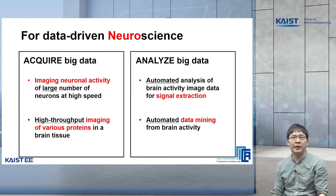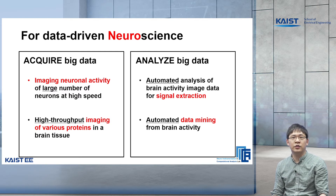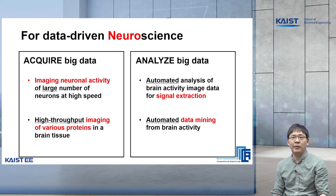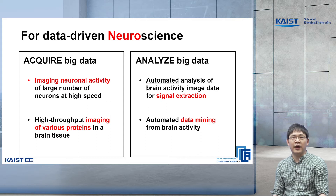On the acquiring the big data side, we are developing technologies to image brain activity of a large number of neurons. We are also working on technologies to simultaneously image various proteins in a brain tissue. On the analyzing side, we develop algorithms to automatically process the brain activity image data to extract the signal from each neuron. And then we apply data mining to find the underlying patterns in brain activity.